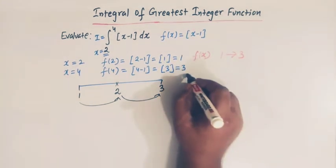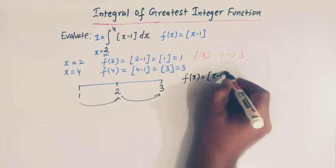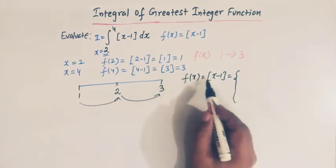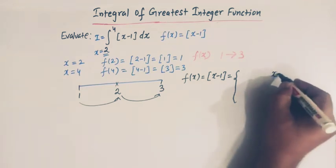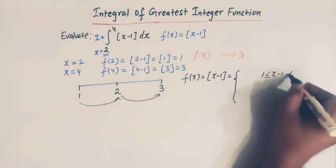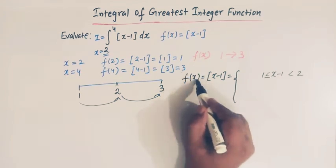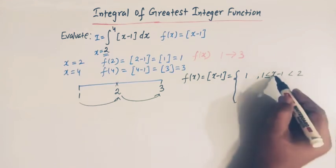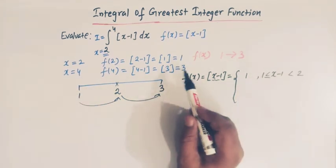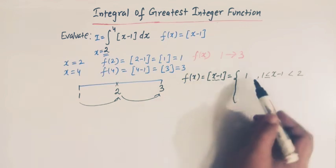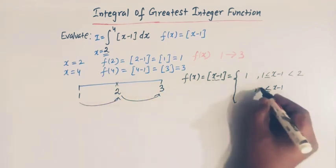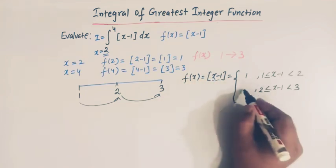Now let us express f(x) = ⌊x − 1⌋ in terms of intervals. When x − 1 lies between 1 and 2, the value of f(x) is 1, due to the definition of the greatest integer function. Similarly, when x − 1 lies between 2 and 3, the value of the function is 2.